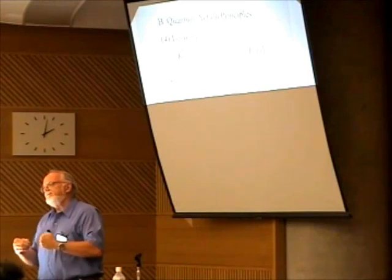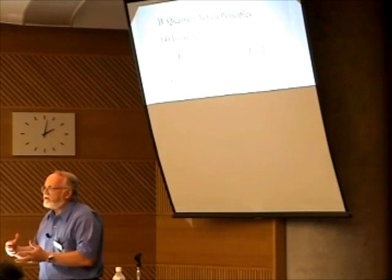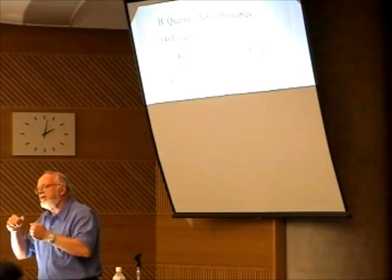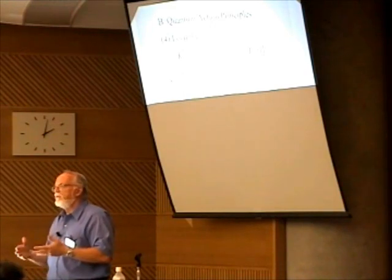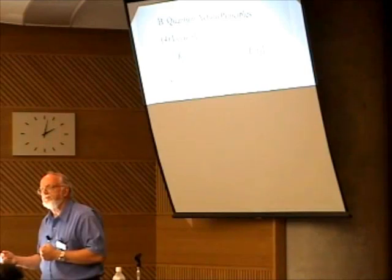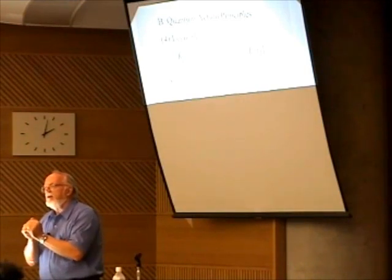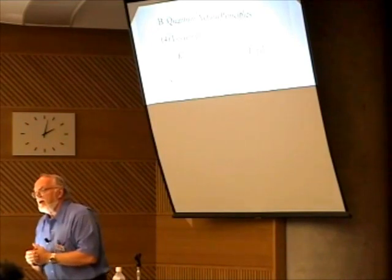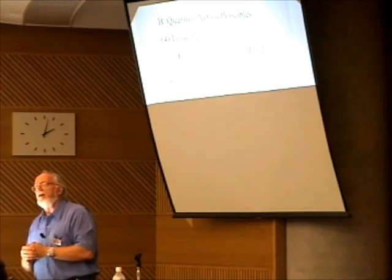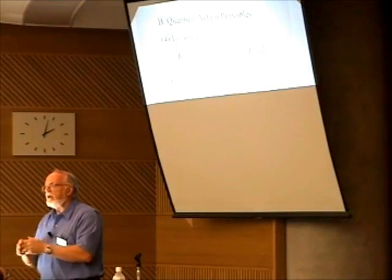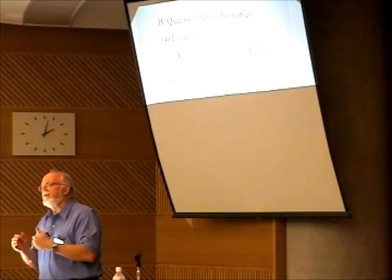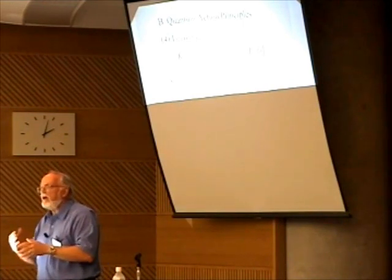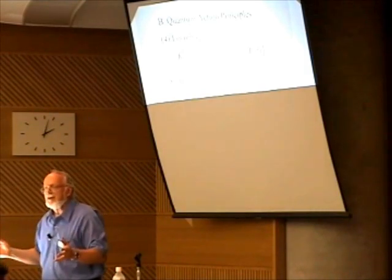Feynman wanted to come up with a new action principle that would allow some interpretation of Hamilton's variational principle. As you may know, Feynman had a great intuitive gift for looking at a problem, seeing where the difficulties lie, and then making an assumption that may sound counter to traditional physics in order to solve that problem.